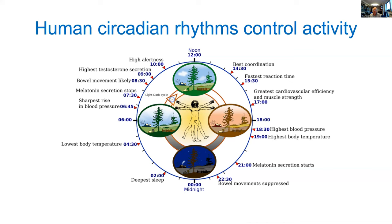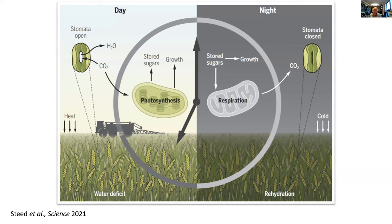This influence of daily cycles on human physiology was known to the Greeks, and probably long before. But it's not just humans which have rhythms — plants do too. When we think about the biology of the plant in a light-dark cycle, here we've depicted a crop, wheat growing in the field, and there is a huge influence of the daily rhythm on the plant.